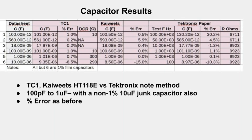I also tested five 1% tolerance capacitors with values ranging from 100 picofarads to 1 microfarad. In addition, I tested one 10 microfarad capacitor from my junk drawer — a ceramic disc that gave strange results. Here I tested with the TC1, my Kaiweets digital multimeter, and of course the Tektronix app note method. As before, I have percent error results on the next slide.